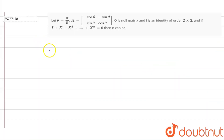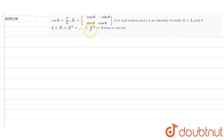Hello student, the question is: let theta equal to pi by 5, and x is equal to a matrix. That is, a null matrix and I is the identity matrix of 2 cross 2. We have given I plus x plus x squared, where x to the power n is equal to 0. What do we need to find out? We need to find out the value of n.